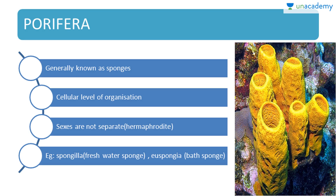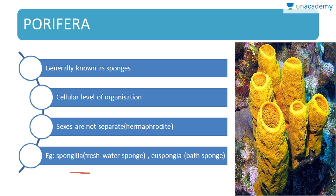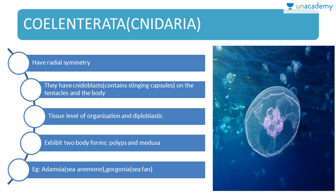Now moving to the various types of animals. First is Porifera, generally known as sponges. They are mostly marine, have cellular level of organization, and do not have separate sexes — they are hermaphrodites. Example: Spongilla is the freshwater sponge and Euspongia is the bath sponge.